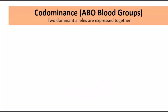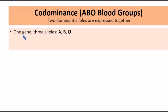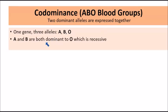With ABO blood groups we have one gene represented by three different alleles: A, B, and O. A and B are both dominant to O, which is the recessive allele. So if A comes with an O, A has the overriding effect over O. If B comes with an O, B would have the overriding effect over O.